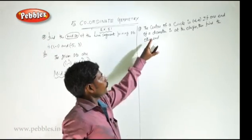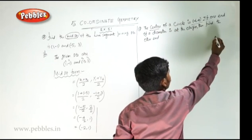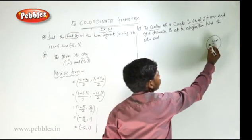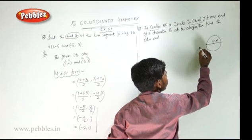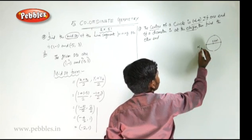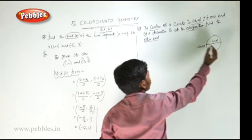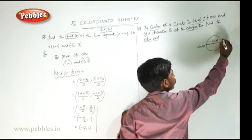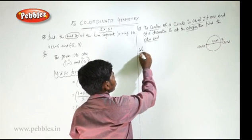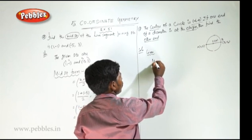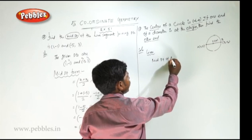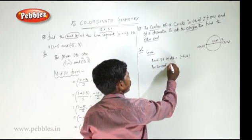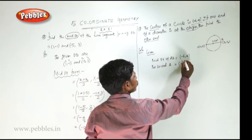Second question: the centre of a circle is (-6, 4). If one end of a diameter is at the origin — that is point A at (0, 0) — find the other end. We do not know the other end point, so we take it as (x2, y2). The given midpoint of AB is (-6, 4), and the coordinates of A are (0, 0), that is x1, y1.